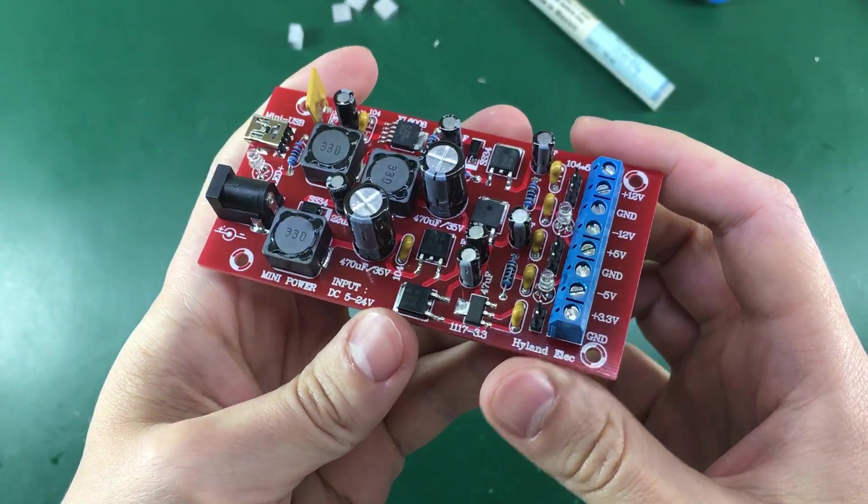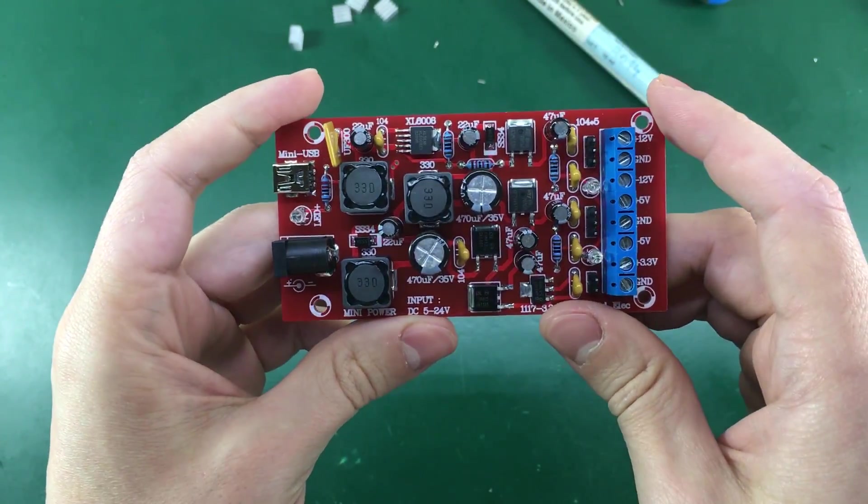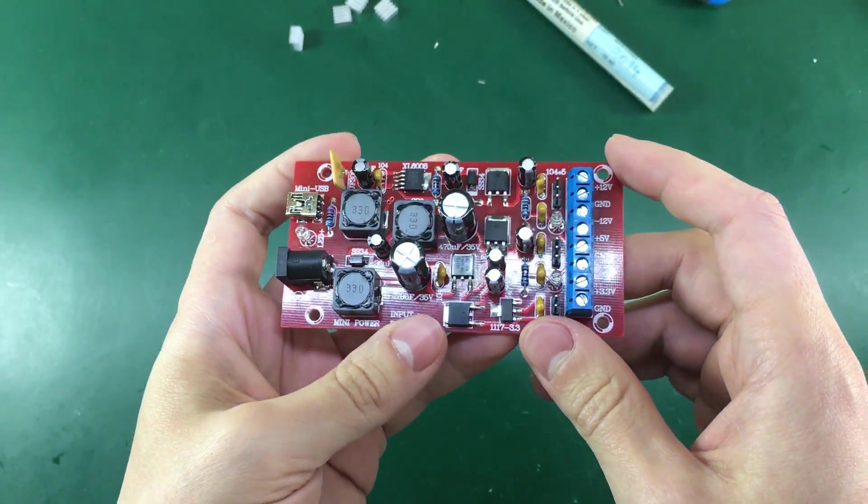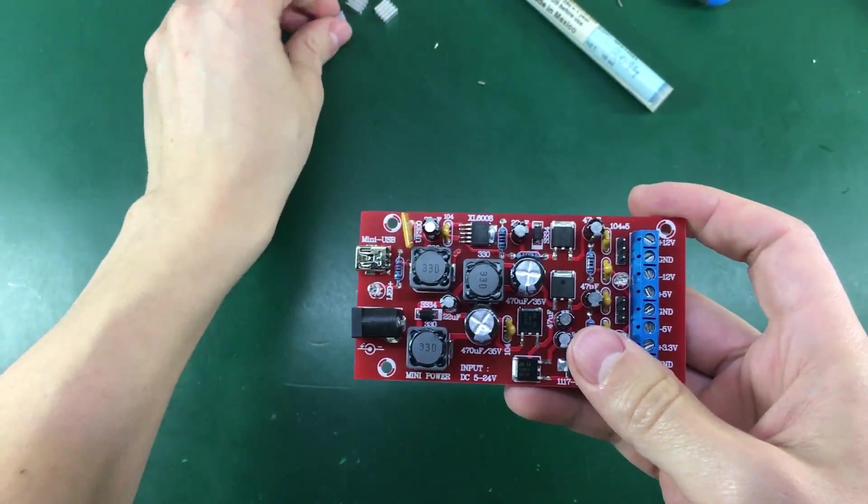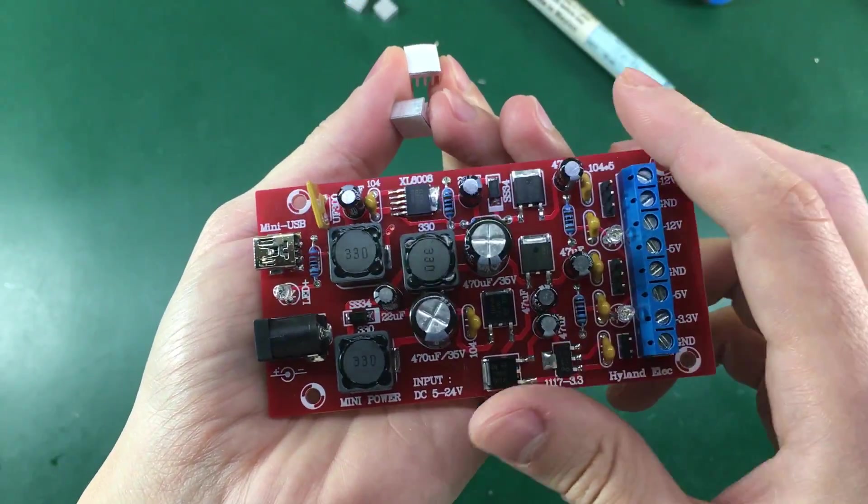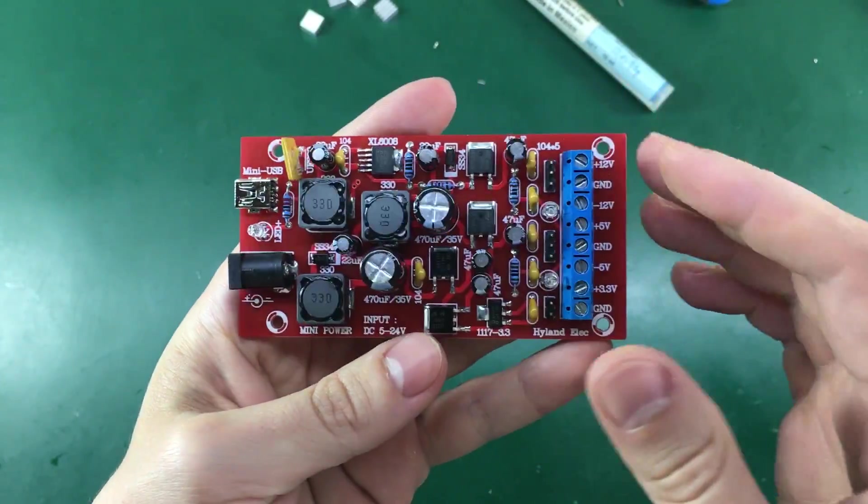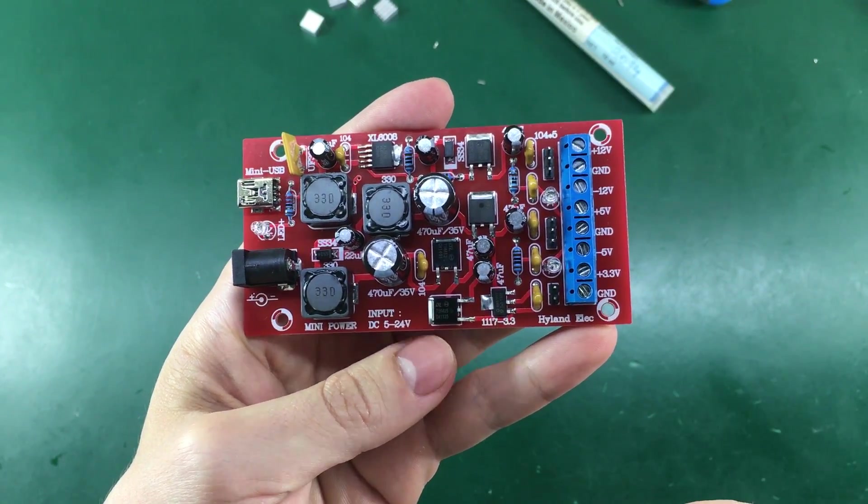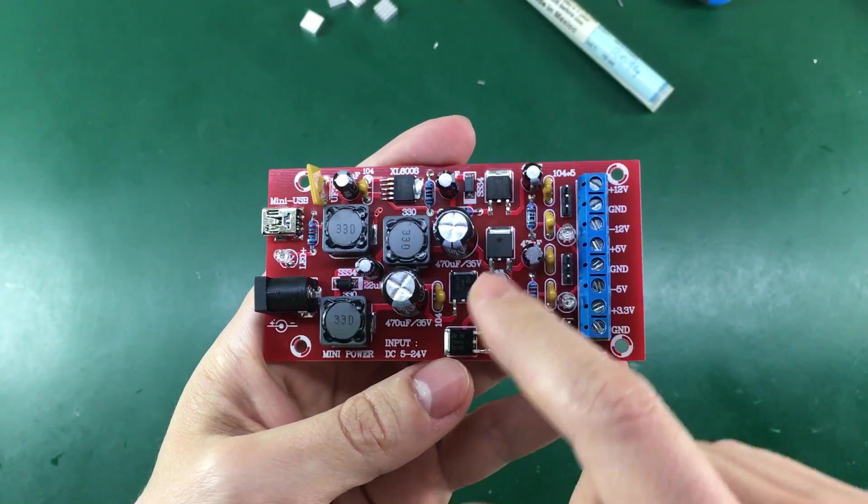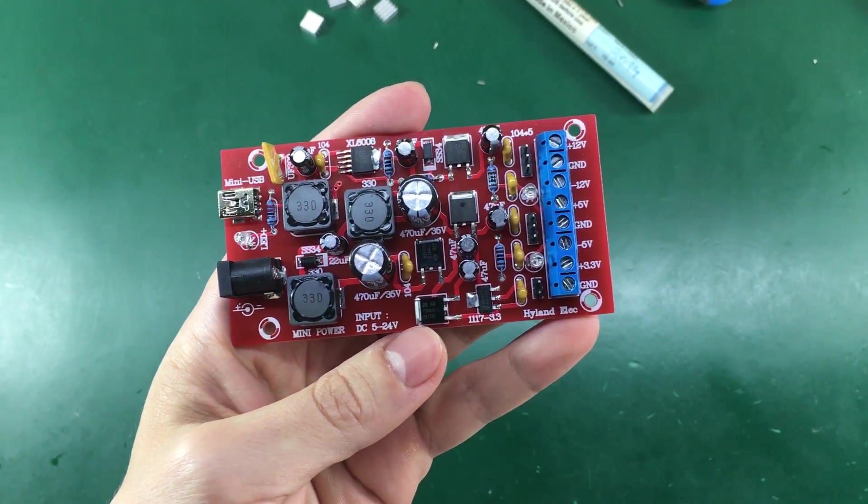So half an hour has passed and the board is now well dried. And before doing the final step which is attaching these small heat sinks on top of each regulator, I would like to test this power supply because if it has any problem and it needs debugging I don't want to have those heat sinks in my way so it's best to test it before attaching the heat sinks.